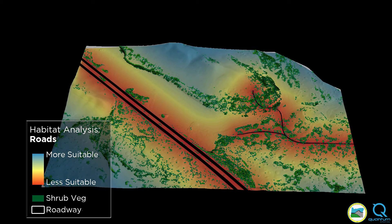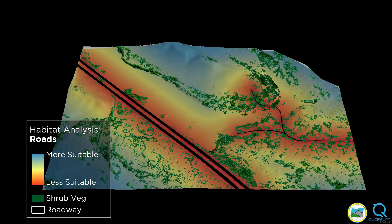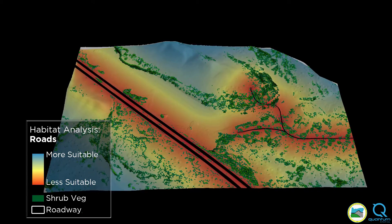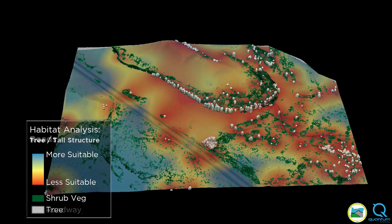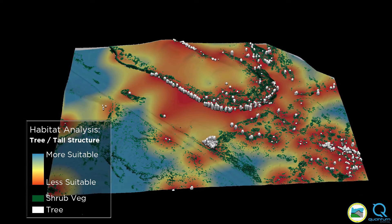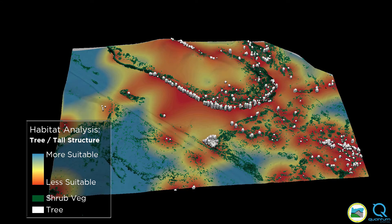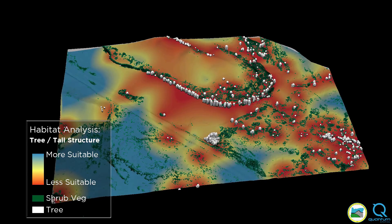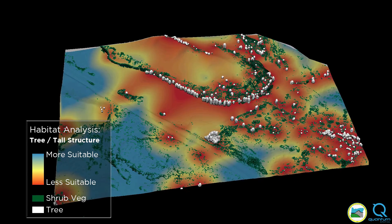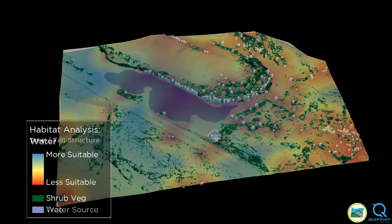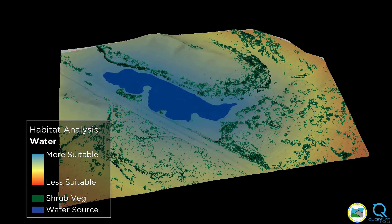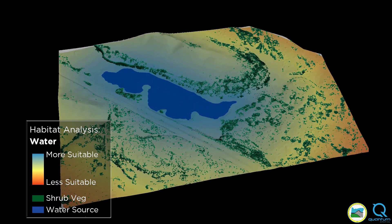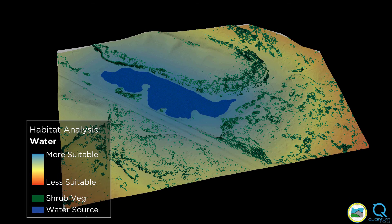Proximity to roads is detrimental to sage grouse. Trees and tall structures provide perches for hawks and other raptors, creating a predation threat. Access to a water source is another factor important to sage grouse.